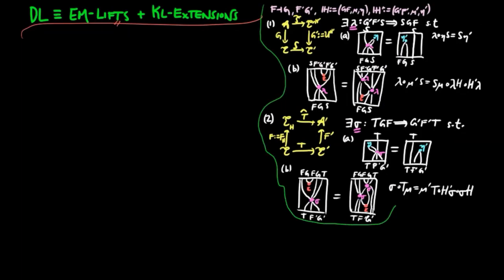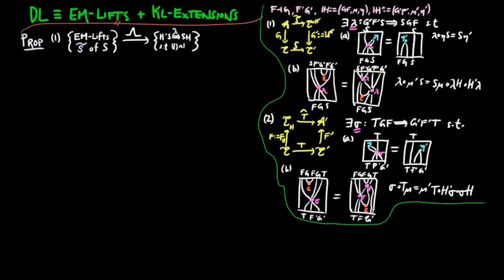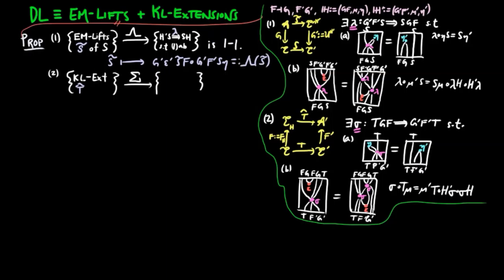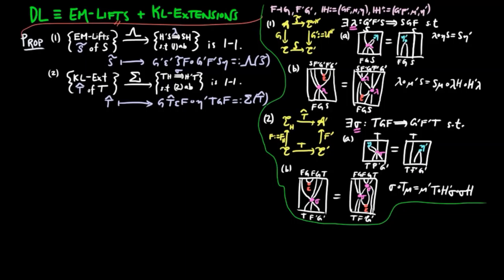Restricting to the Eilenberg-Moore liftings and Kleisli extensions of forms one and two respectively, we have the following result. The assignment Λ, which we gave last time, takes an Eilenberg-Moore lift S̃ of S to a natural transformation satisfying 1A and B — and this is a one-to-one correspondence. For two, the assignment Σ takes a Kleisli extension T̂ of T to a natural transformation satisfying 2A and B, and this is also a one-to-one correspondence.